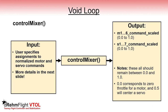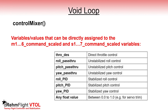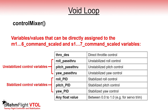Next we get to the control mixer, which is where there's a bit of customization required for your vehicle configuration. You'll need to specify the assignments to the m1 to m6 command scaled and s1 to s7 command scaled variables, which will ultimately all be within the range of 0 to 1. A value of 0 corresponds to 0 throttle for a motor, and a value of 0.5 assigned to any of these variables is the center, which will center a servo. The throttle desired variable is just direct throttle control scaled from 0 to 1. Unstabilized variables roll, pitch, and yaw pass-through have values between -0.5 and 0.5 and correspond to direct unstabilized commands from the receiver. The roll, pitch, and yaw PID variables generally have values between -1 and 1 when the controller gains are tuned properly.